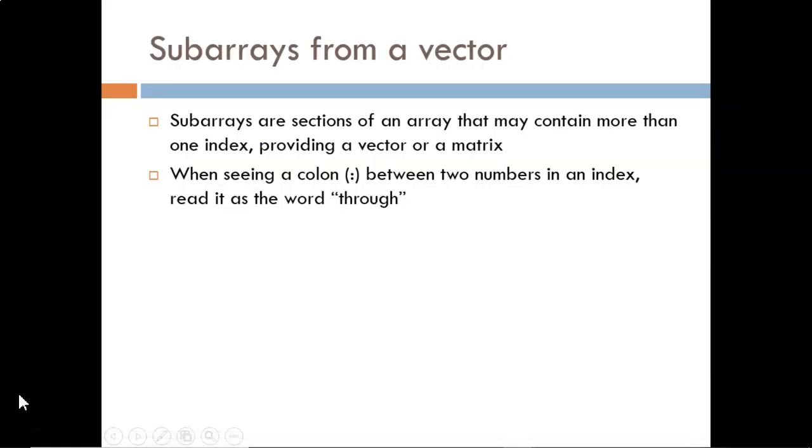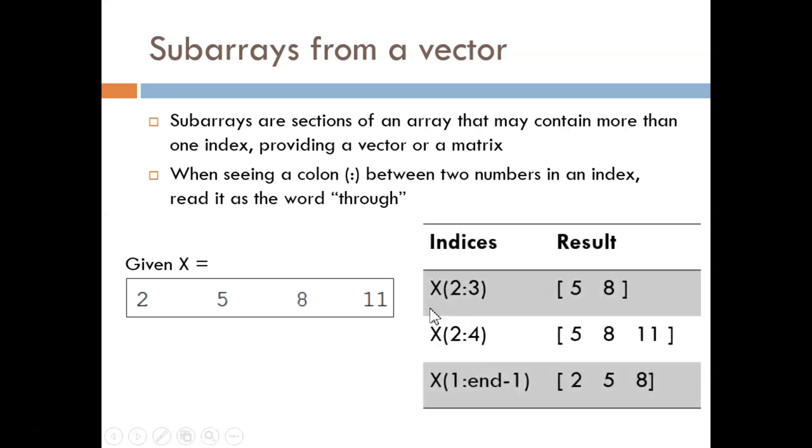In this slide, we will examine examples of identifying subvectors from a larger vector. Whenever we see a colon between two numbers in an index, interpret it as the word through. This row vector X will be our starting point. When we see X parentheses 2 colon 3, read that as go into vector X and extract from index 2 through 3.